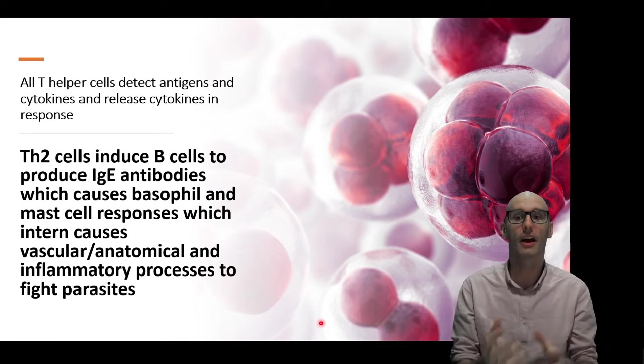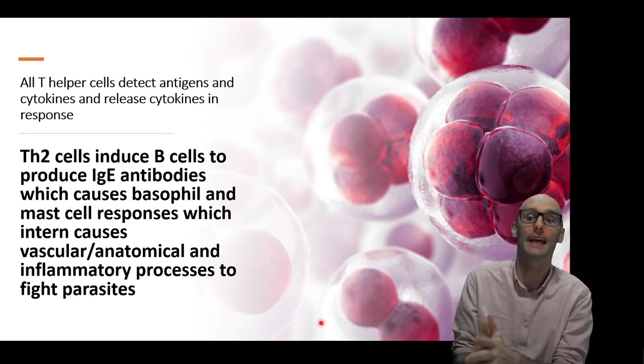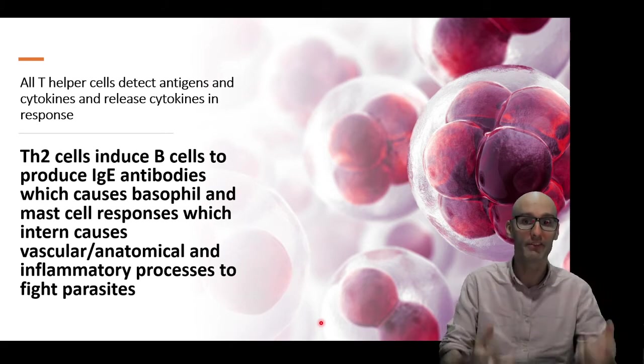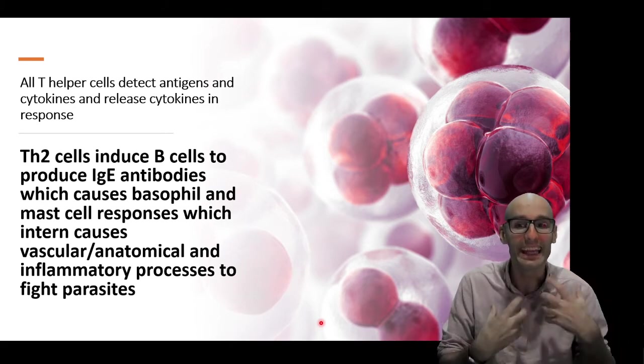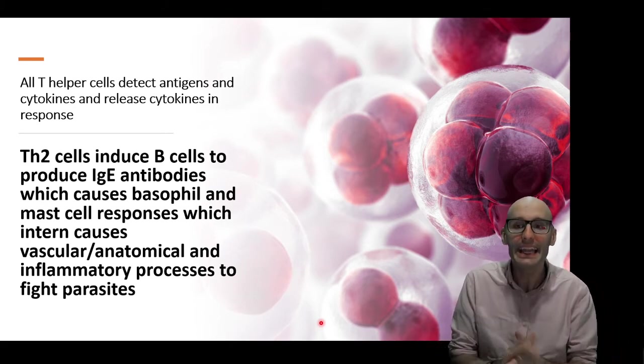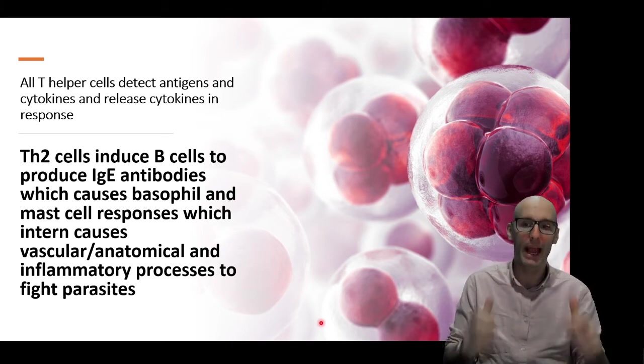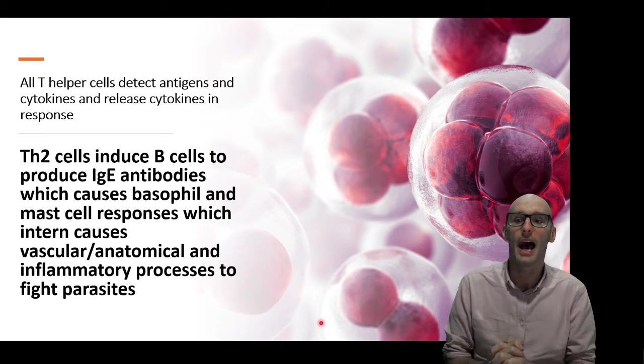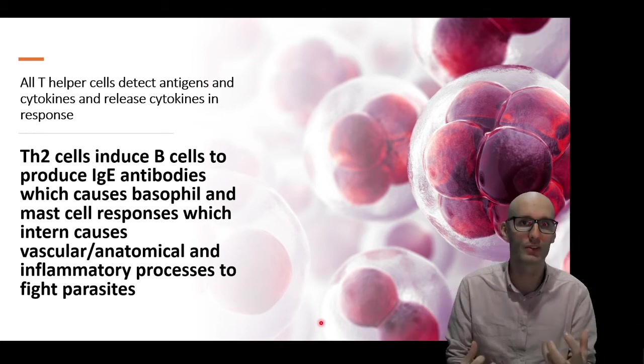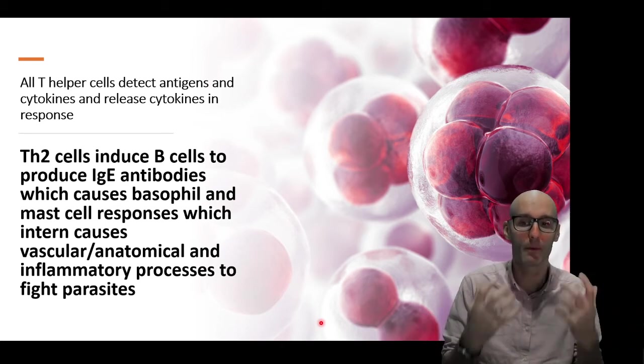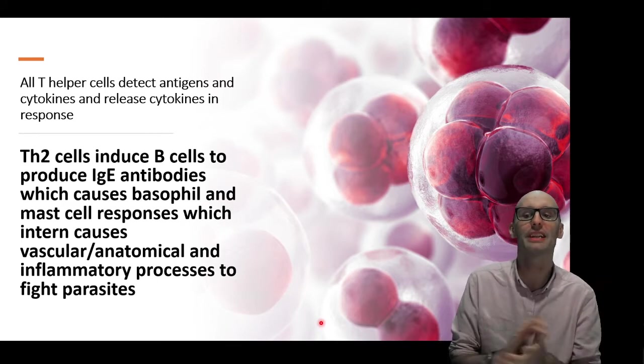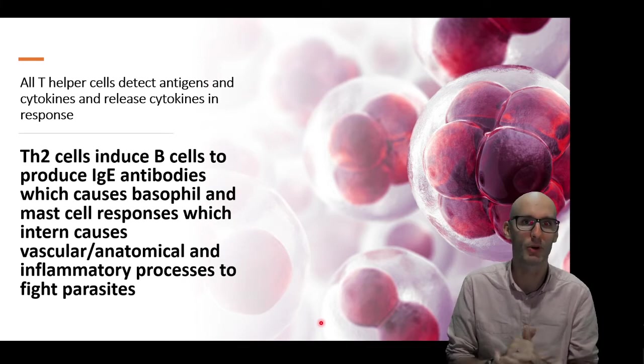And the TH2's output, what it does is it releases cytokines, it induces B cells to start producing antibodies, a particular kind of antibody mostly, an IgE antibody. Now IgE antibodies are recognized by basophils, mast cells, as well as eosinophils, to initiate responses that are really good at getting rid of parasites, including eosinophil degranulation, as well as vascular and anatomical responses.